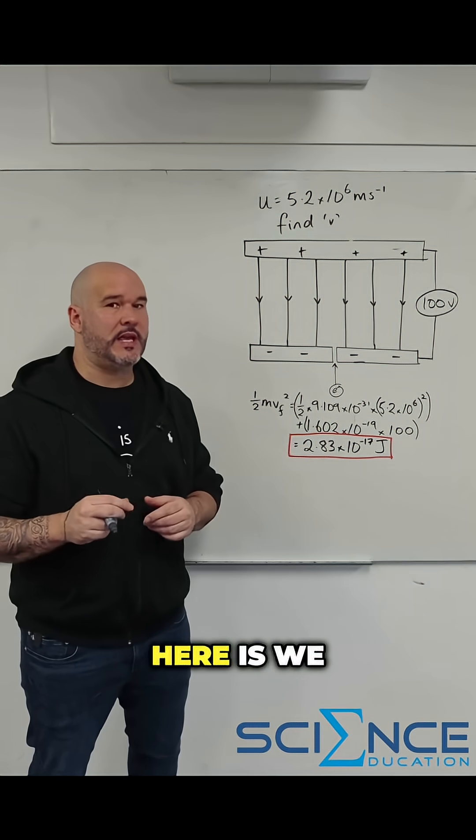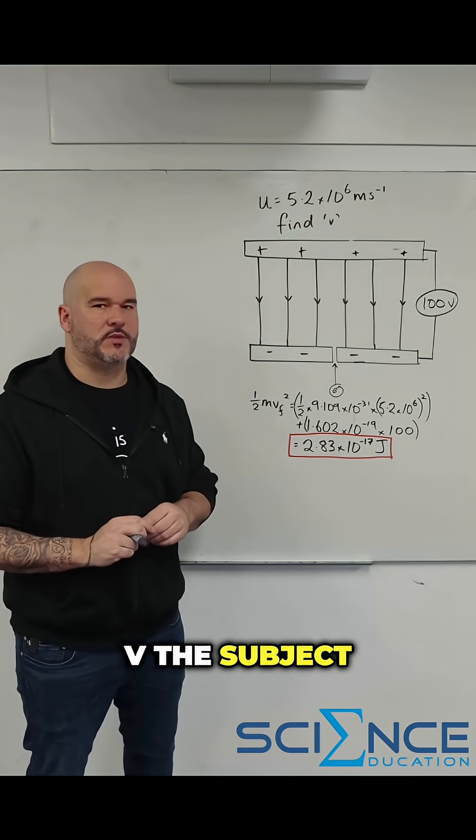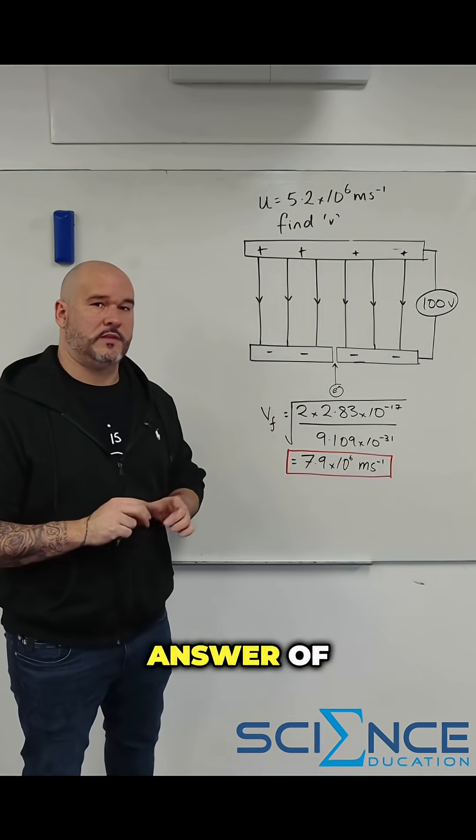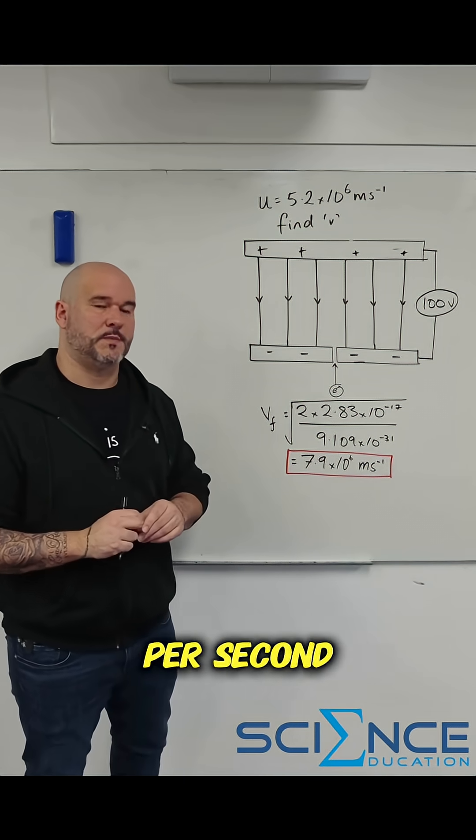And simply all we do here is we just rearrange our equation and we make V the subject. So let's do that now. We end up with a final answer of 7.9 times 10 to the 6 meters per second.